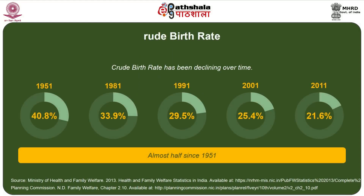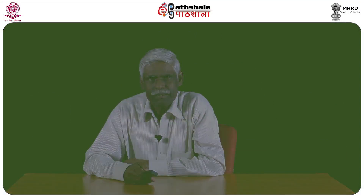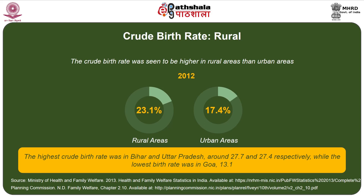Besides urbanization, two important components of population growth are birth rate and death rates. In India, the birth rate has been showing a declining trend, especially from 1951, when it was 40.8 births per 1000 population. The latest figure of 2012 shows it has been reduced to almost half, now at 21.6 per 1000 population. The crude birth rate is relatively higher in rural areas, at 23.1, whereas in urban areas it is as low as 17.4.